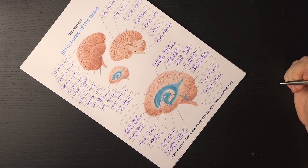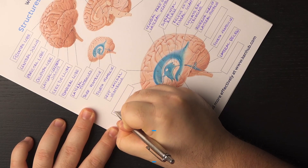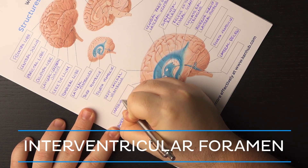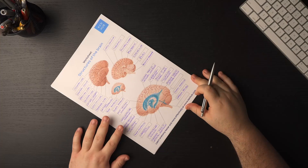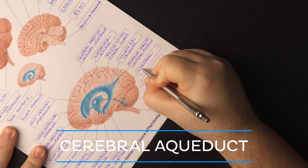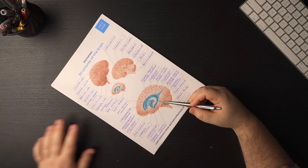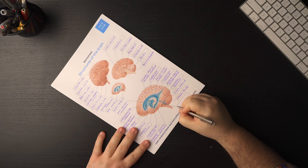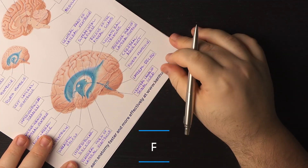The ventricles are filled with cerebrospinal fluid, and as you can see, they communicate with each other. The interventricular foramina are the channels connecting the lateral ventricles to the third ventricle. The cerebral aqueduct connects the third and fourth ventricles. Then the system is made continuous with the central canal of the spinal cord, which originates from the floor of the fourth ventricle. And that is it — we have our sheet completely labeled.